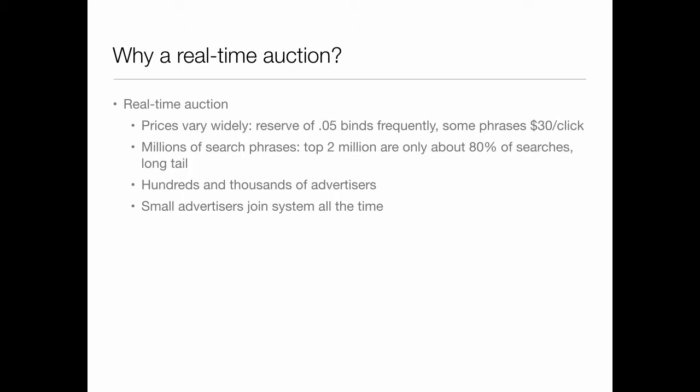There are also some time-sensitive items. If you want to have a keyword auction for a limited period of time for a promotion, that complicates things. There are changing products and profits. So that's why you have it real-time — so these sorts of things can be taken into account and changed.